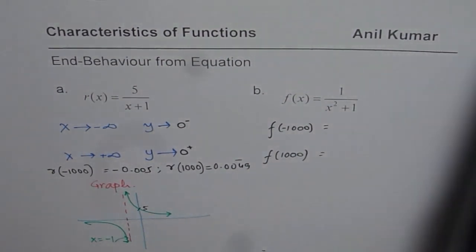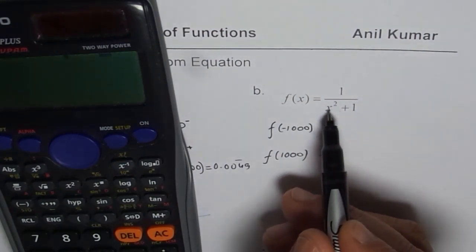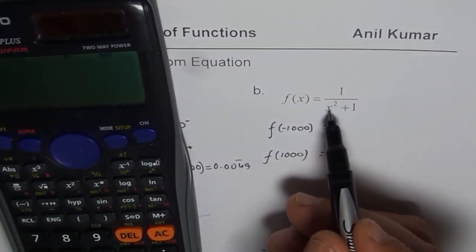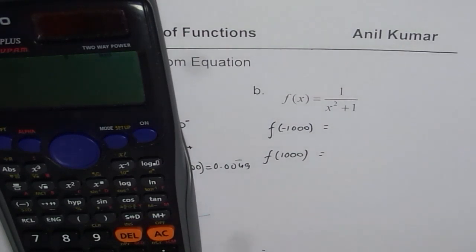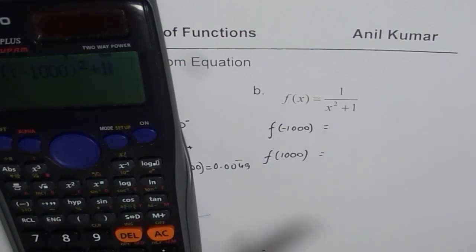So in this case, f of minus 1,000 will be, you know, 1,000 squared is going to be positive. So it is going to be 1 divided by within bracket, we can write again a bracket, minus 1,000, bracket close, square, and then plus 1, bracket close.